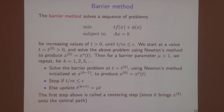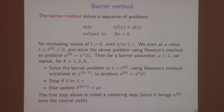To summarize the barrier method: we solve a sequence of barrier problems as t increases until m/t ≤ ε. We start at some initial t₀, solve using Newton's method to get x₀, then use a scheme for increasing the barrier parameter — choosing a constant μ (e.g., μ = 2) and multiplying t by μ each time.